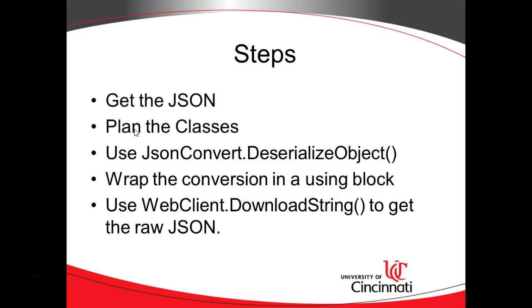We have to take that conversion and put it into what's called a using block, and then we need to use WebClient.DownloadString to get the raw JSON, and then we pass that raw JSON to the DeserializeObject method. The steps feel a little bit out of order, because the last thing we do is figure out how to actually read the stream of JSON. But it is important that we plan this way, because we have to think about what we want the JSON to look like once it's pushed into a series of objects in our project.